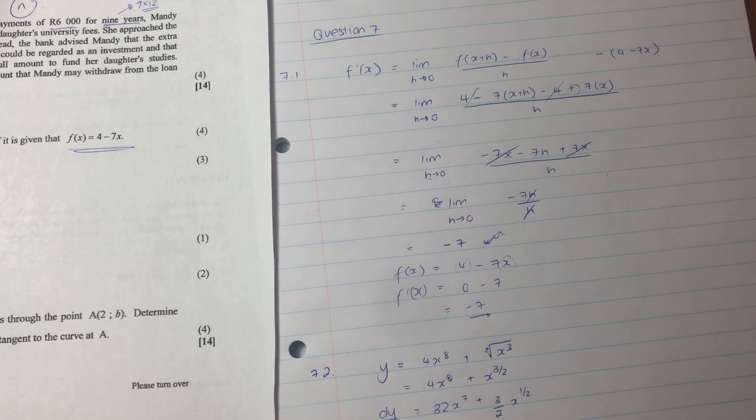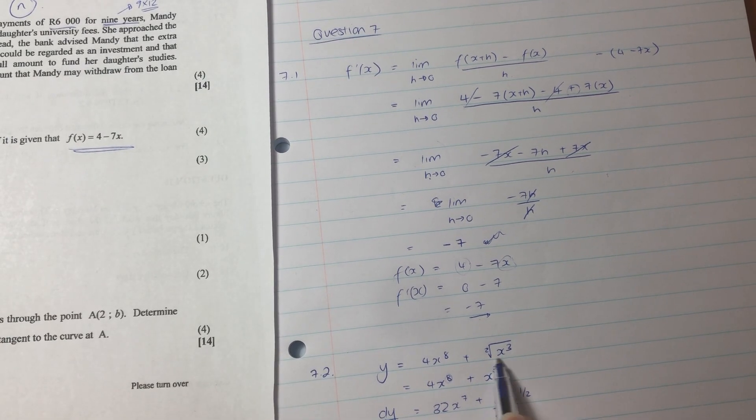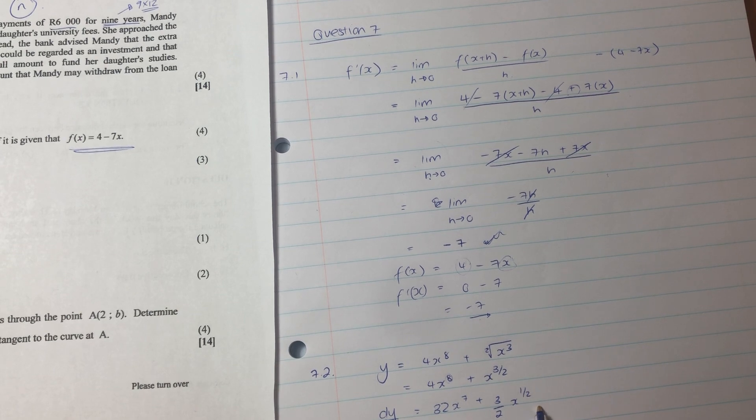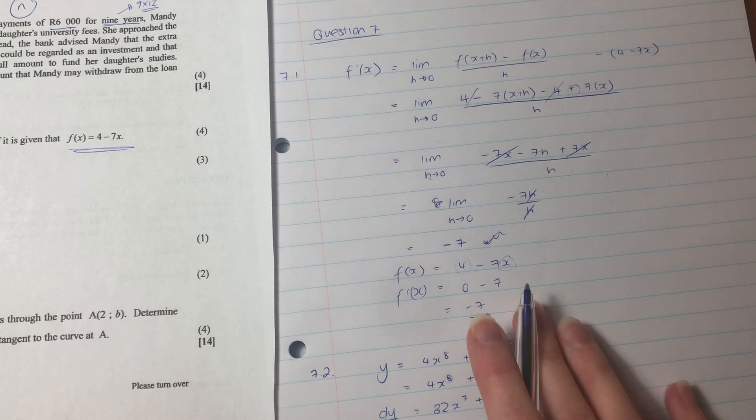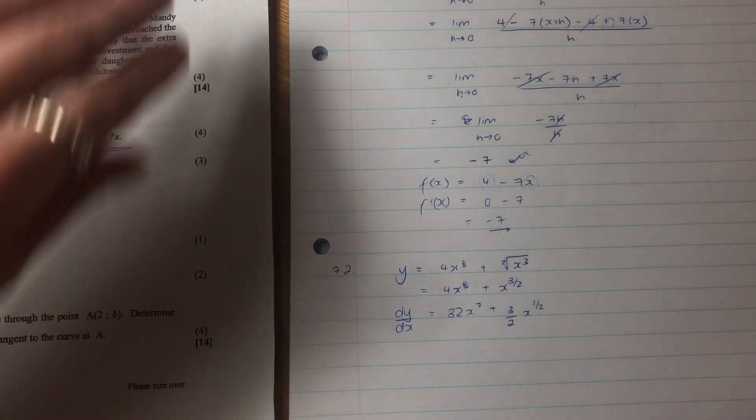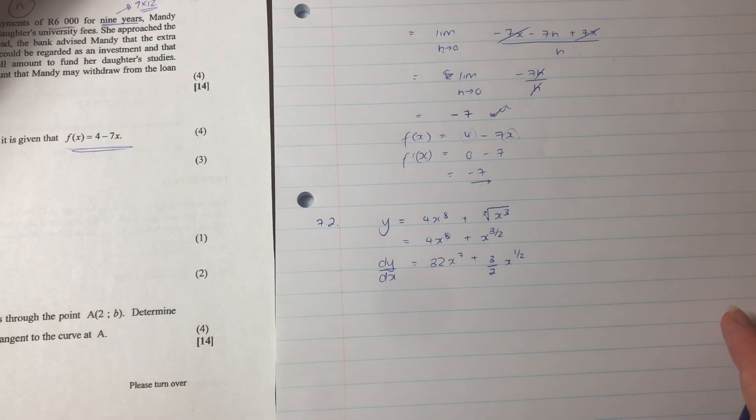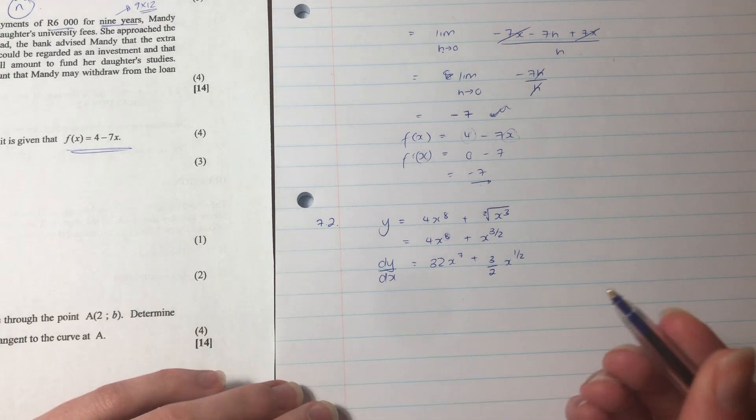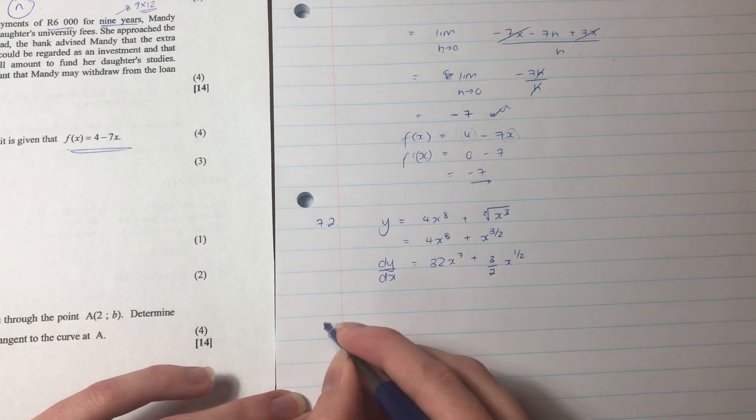Let's now get dy by dx. How do we do that? We take the exponent here, times it by 4, and then we subtract 1 from that exponent. Do the same here. 3 over 2, subtract 1 would be a half. You just need to be quite good with your fractions, but also with your multiplication. If you're not good with that, check it on your calculator, but this is your final answer.